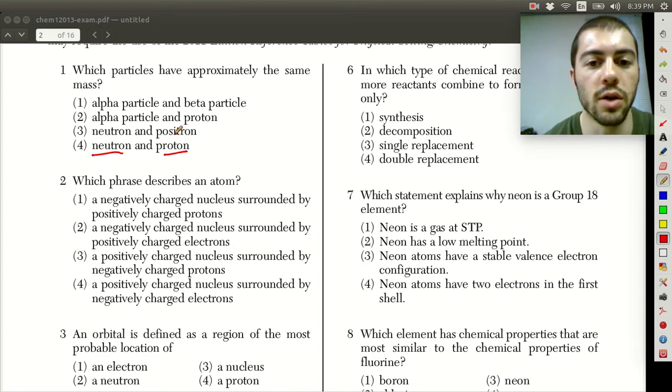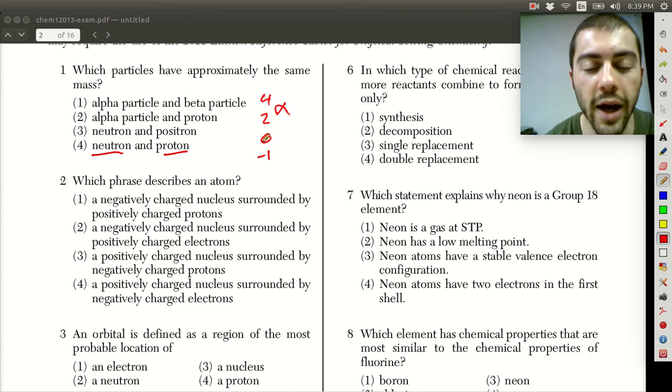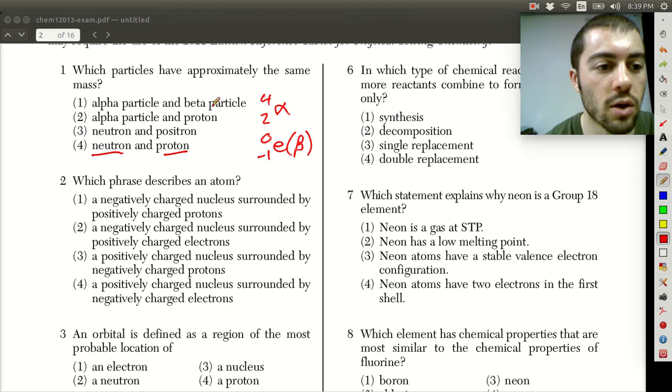Now if we look at some of these other particles here, it goes back to the unit on nuclear chemistry. Alpha particles remember we said have a mass of four and a charge of two so we could label it as four two alpha particle here and a beta particle had zero for the mass, again it doesn't actually have zero mass but in terms of atomic mass units it's so negligible compared to a neutron or proton that we say it has zero. Negative one for the charge and we can label this E or use the beta symbol, either way works. So alpha particles and beta particles have a mass of four and zero respectively so these obviously don't have the same mass.